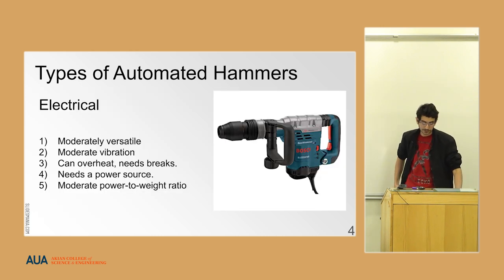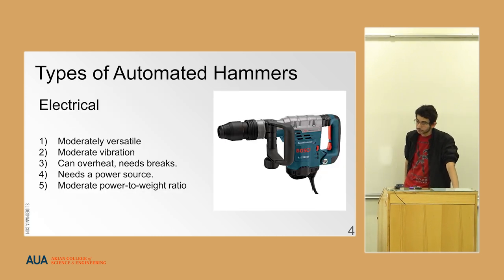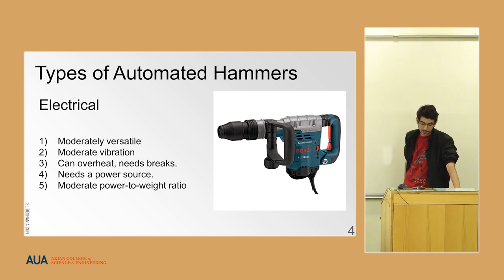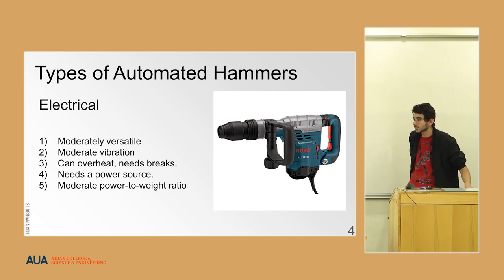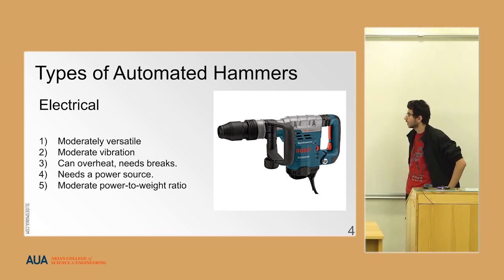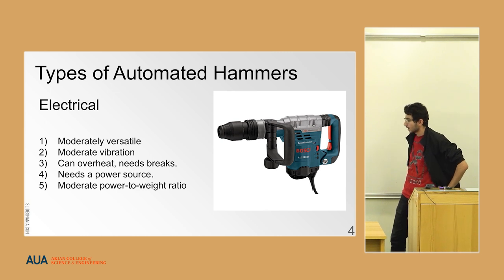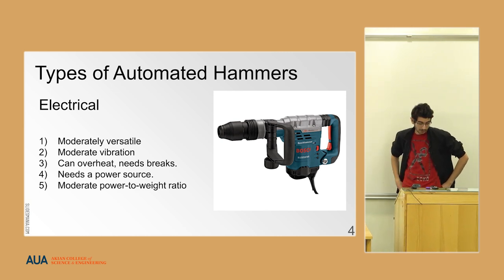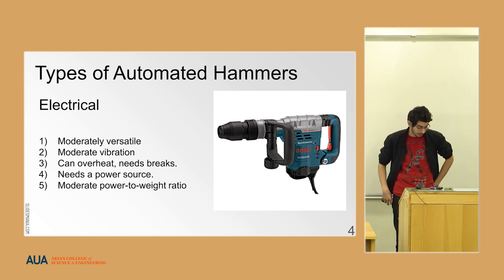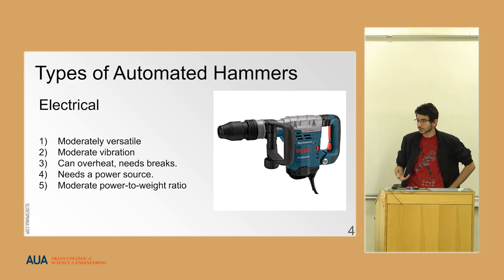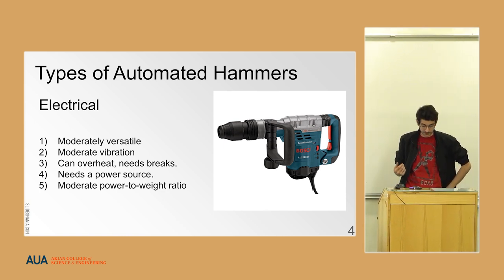The next type is the electrical hammer, which is moderately versatile — it can be used for different cases but is not as versatile as the pneumatic ones. It has moderate vibrations and can overheat, making it not quite good for continuous use — it needs breaks. It requires a power source like a socket, and it has a moderate power-to-weight ratio, not as powerful as pneumatic ones.